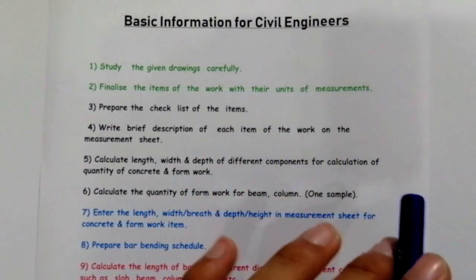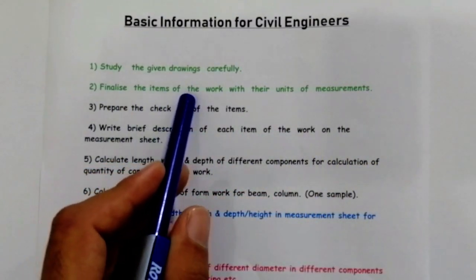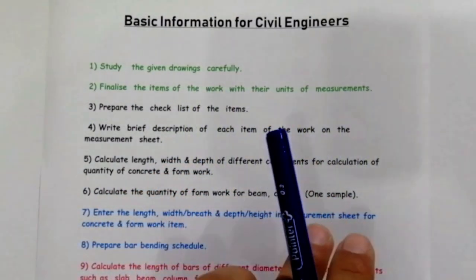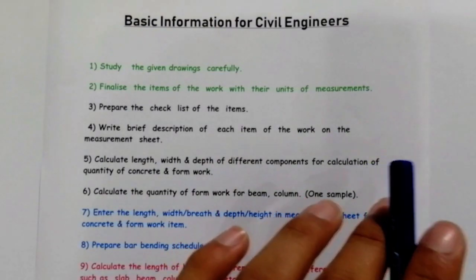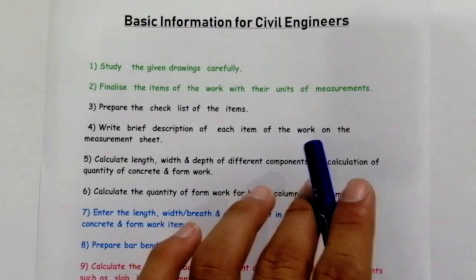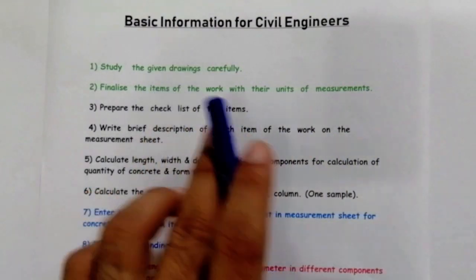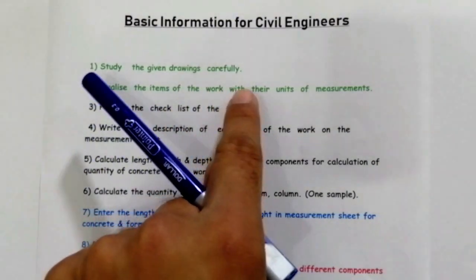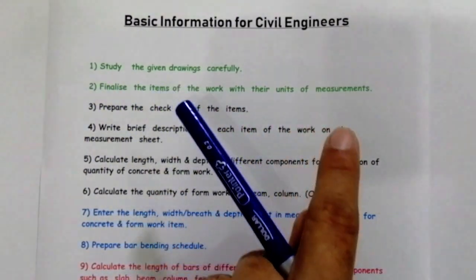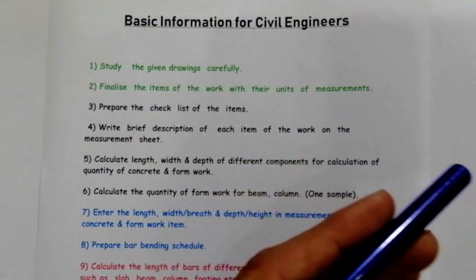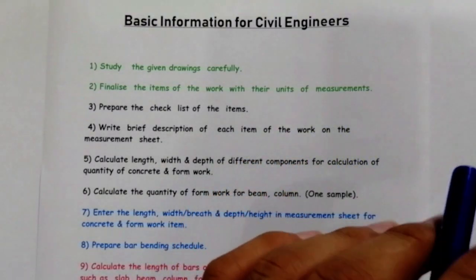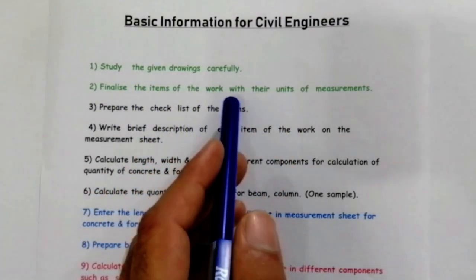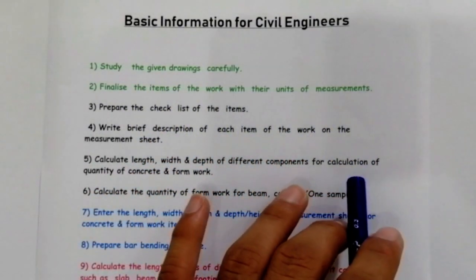The second point is: finalize the items of work with their units of measurement. Because we have different works and we use different items in building construction works. There are square feet, cubic meter, etc. Finalize the items of work with their units of measurement — it's very important.